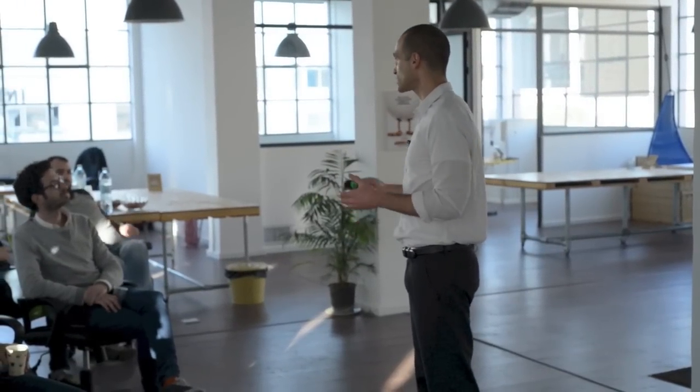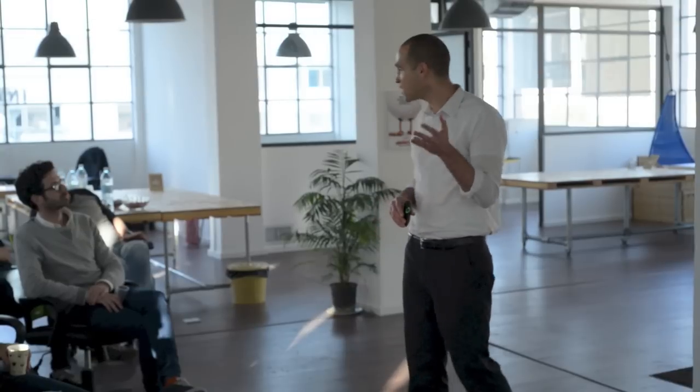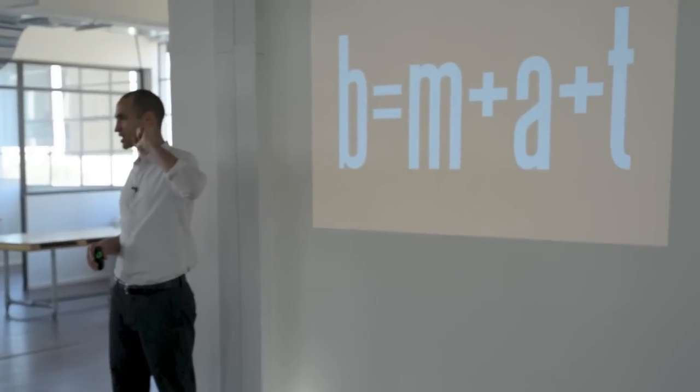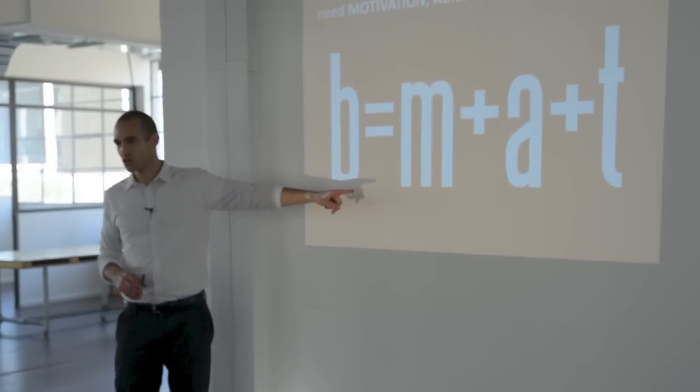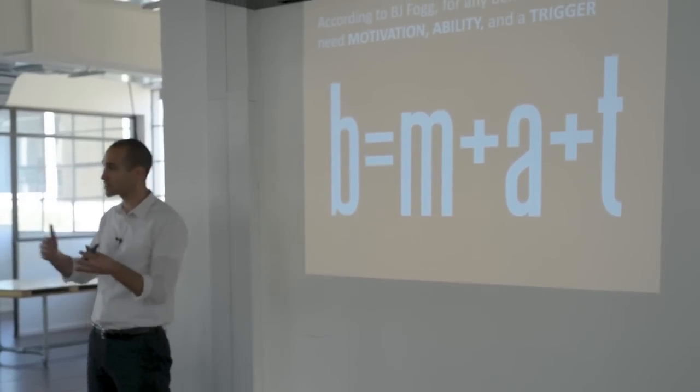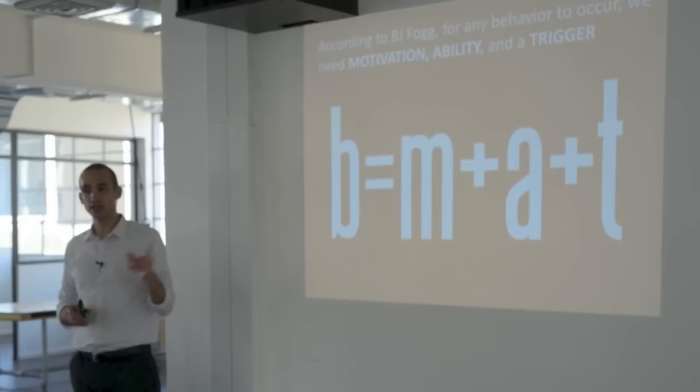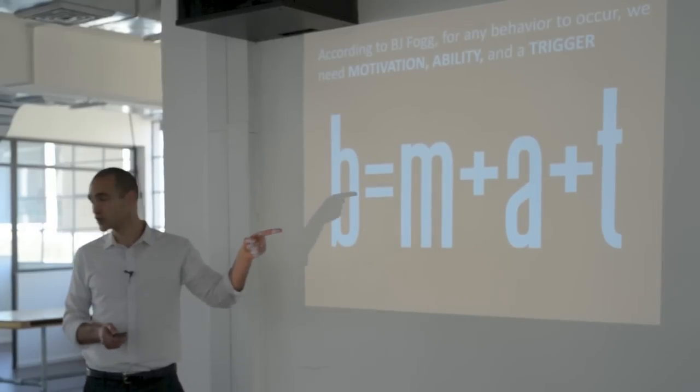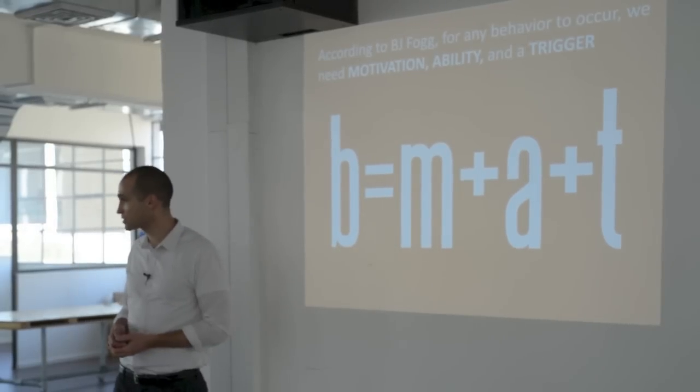Now it turns out that there's actually a formula for individual behaviors. Individual actions. And that formula comes to us from BJ Fogg, who's a researcher at Stanford. He runs the Persuasive Technology Lab. And Fogg posits that for any behavior to occur, any singular behavior to occur, that's B. We need three things at the same time. We need sufficient motivation. We need ability. Ability is how difficult or easy something is. And we need a trigger. We need motivation, ability, and a trigger at the same time. So we talked about triggers already. Let's dive into motivation and ability.